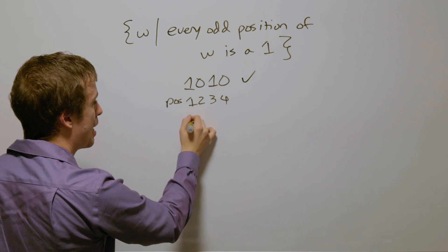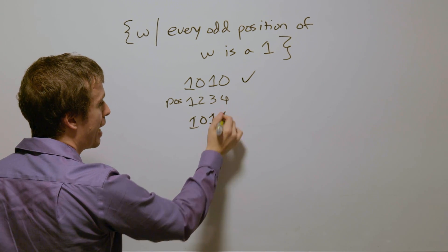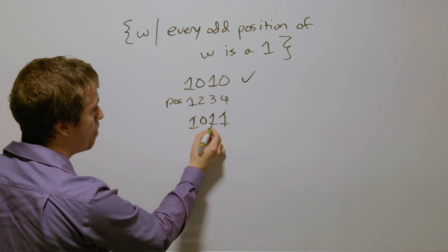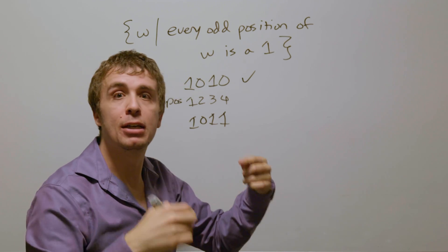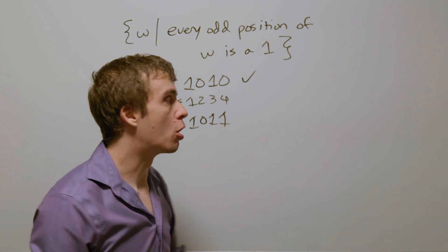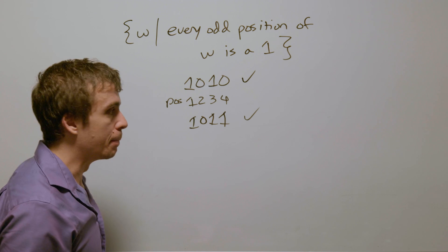And if we had something even with more ones in it, that's okay, because every odd position is a one. That doesn't mean that ones can't exist otherwise. It just means that the odd position things are a one. And so that string should also be accepted.